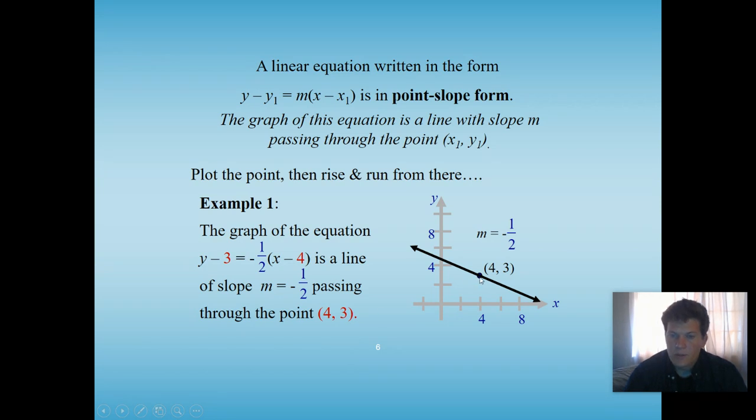So we can plot that point first, positive 4, positive 3. And then we count our slope 1 over negative 2. So I can go down 1 over 2, down 1 over 2, down 1 over 2. And I can keep going to get as many points as I want, but really all you need is 2 more. I can connect the dots. There's my graph based off of this point-slope form.